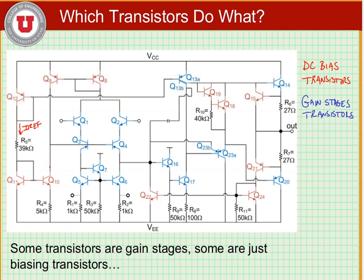Q9 is going to be fed that current, and the current is going to be mirrored through Q8. I should label Q13B and Q13A in red as well, these are DC bias transistors. This is kind of a unique configuration, so we'll look at it next.